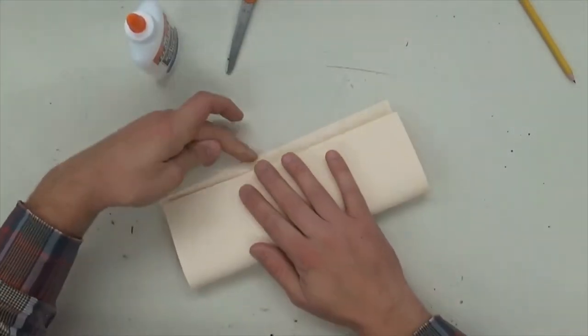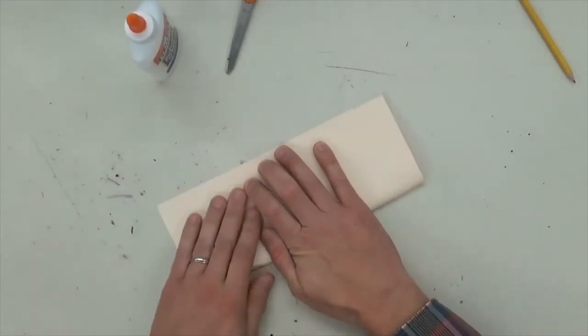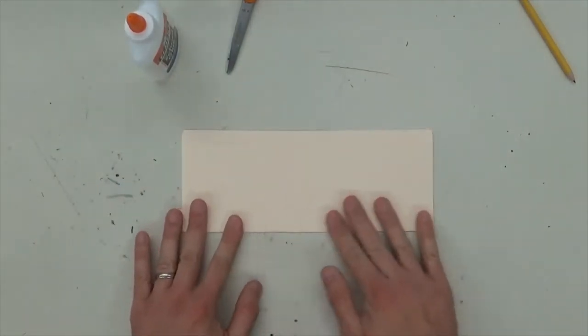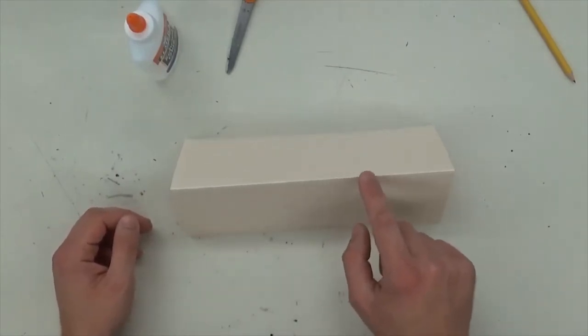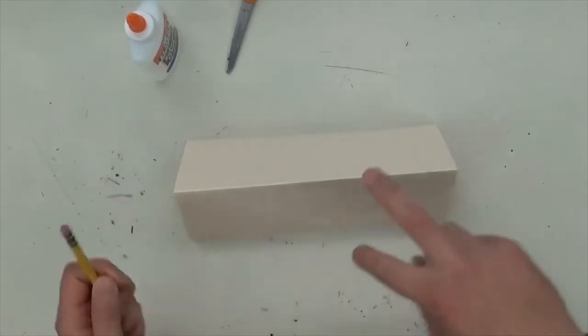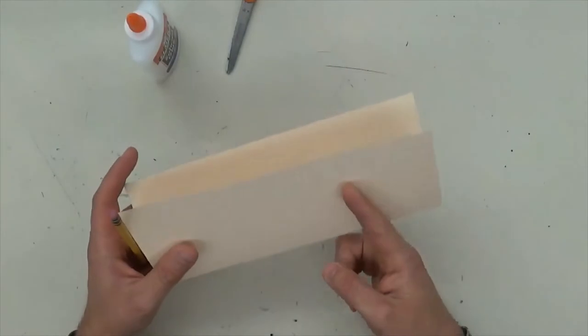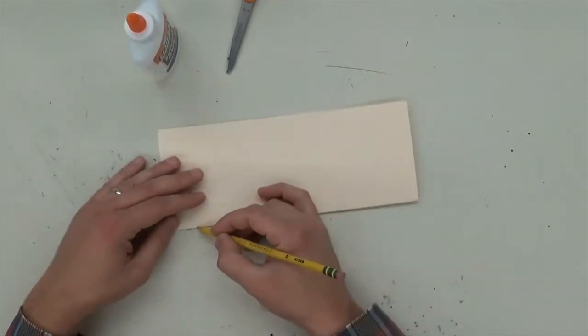You could fold it in half the hot dog way or the hamburger way, depends on what you want the shape of your mask to be. So now that I've got my folded side, that's what I'm gonna cut through. I'm gonna cut through the folded side and I'm gonna cut half of the shape of my mask.